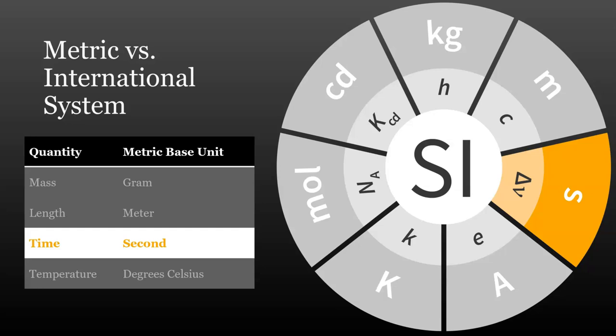Time is sort of the odd man out among metric and SI base units. The official base unit of time is the second. And you will often see fractions of seconds given in prefixed units, such as a nanosecond. For most amounts of time longer than a second, however, the traditional units of minutes, hours, days, and years are often used instead of the metric prefixes.